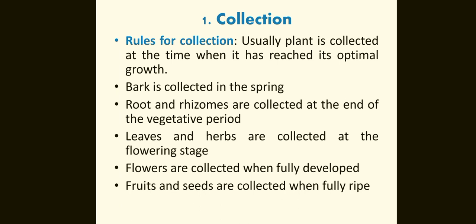Rules for collection. Usually, the plant is collected at the time when it has reached its optimal growth. Bark is collected in the spring. Roots and rhizomes are collected at the end of the vegetative period. Leaves and hops are collected at the flowering stage. Flowers are collected when fully developed. Fruits and seeds are collected when fully ripe.